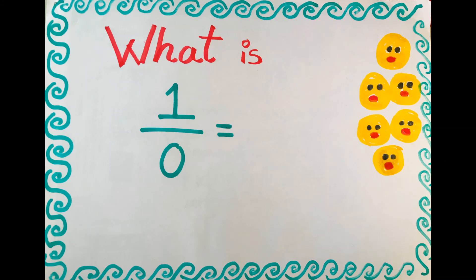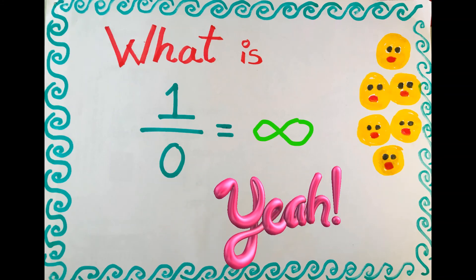So hence, 1 upon 0 is equal to infinity.